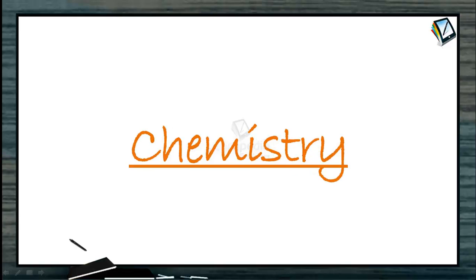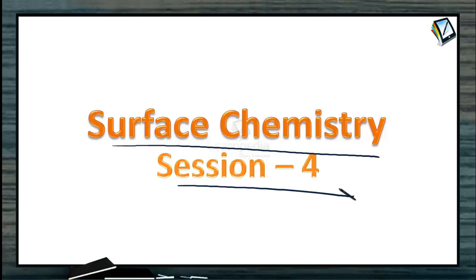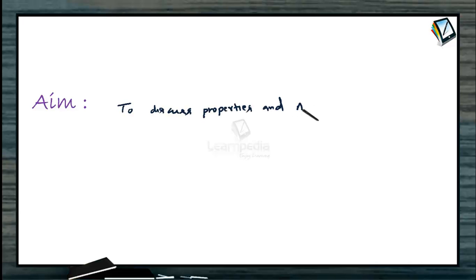Welcome to chemistry class. We are in the chapter surface chemistry, session 4. In this session we are going to discuss the structures, properties, and applications of the colloidal state and emulsions. Our aim is to discuss properties and applications of colloidal state and emulsions.